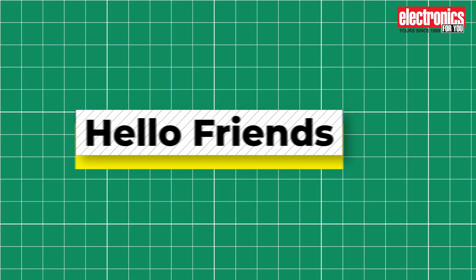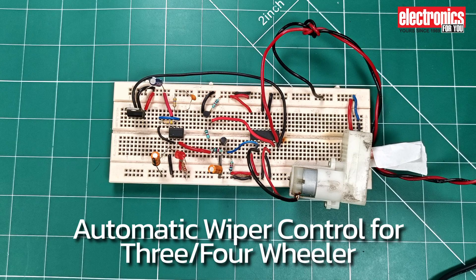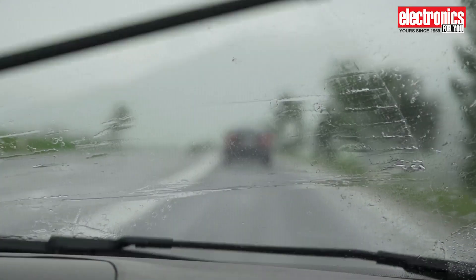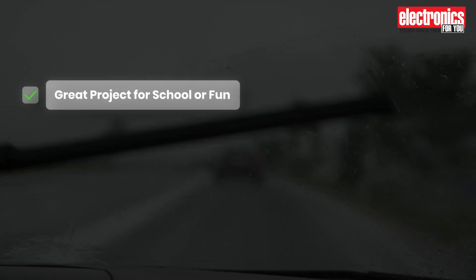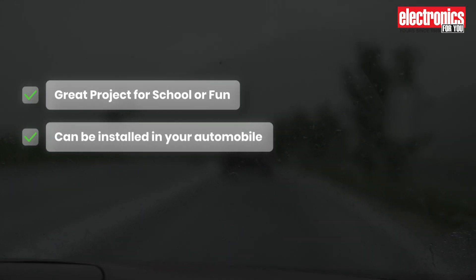Hello friends, today's project is automatic wiper control for three or four wheelers. With this project, you can automate the function of car wipers during rain. It's a great project for school or just for fun and you can also install this circuit in your automobile.